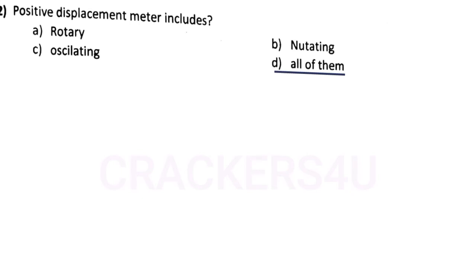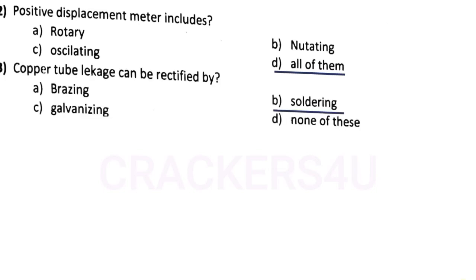Question number thirty-nine: positive displacement meter includes — answer option D, all of them: rotary, oscillating, and nutating types. Question number forty: copper tube leakage can be rectified by — answer option B, soldering.